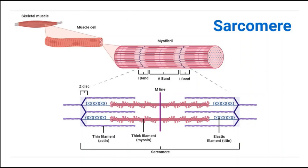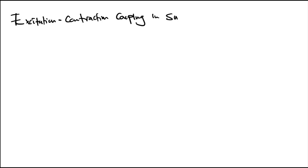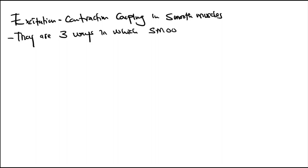It's important to know the sarcomere structure and its location on the myofibril. Now that we've covered excitation-contraction coupling in skeletal muscle, let's look at excitation-contraction coupling in smooth muscles. In smooth muscles, there are three ways in which smooth muscle contracts.